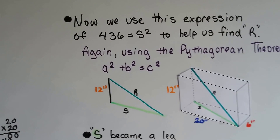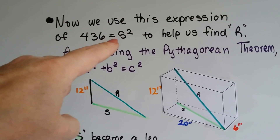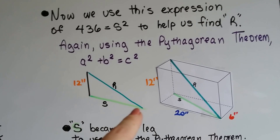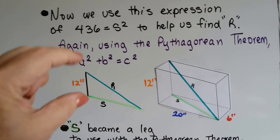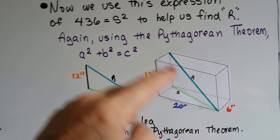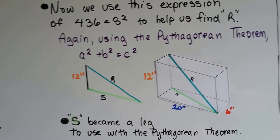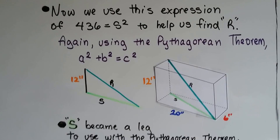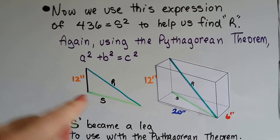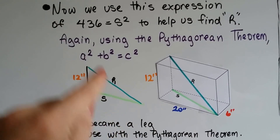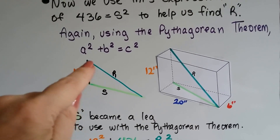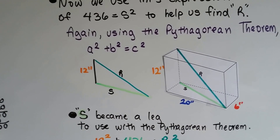Now we're going to use this expression — 436 equals S squared — to help us find R. We know this height is 12 inches, and it's sitting in the box just like my triangle was sitting in that cardboard box. Using the Pythagorean theorem again, we're going to use S as a leg. This 436 is now going to be a leg together with the 12 inches, and then we're going to find R as the hypotenuse.